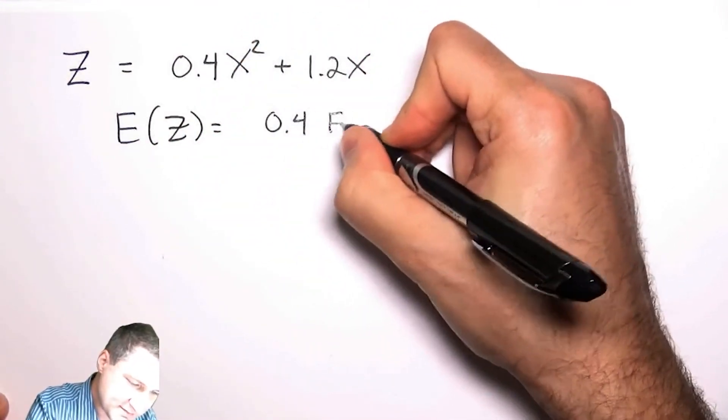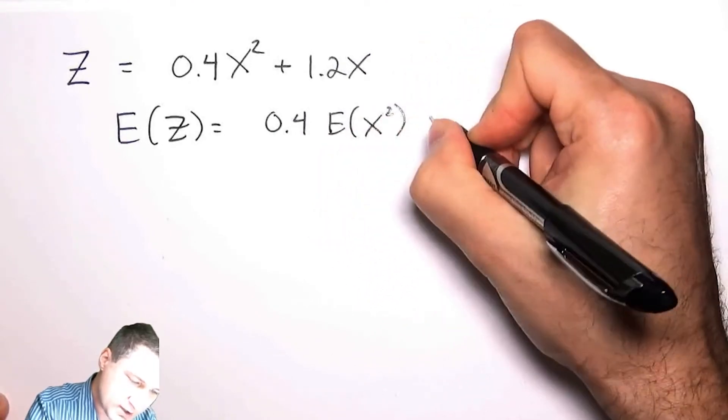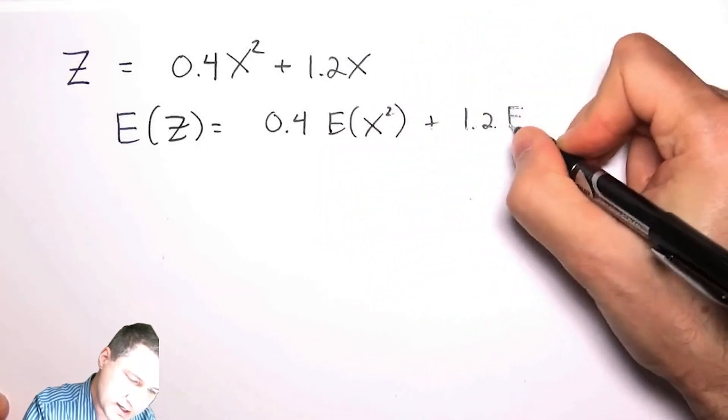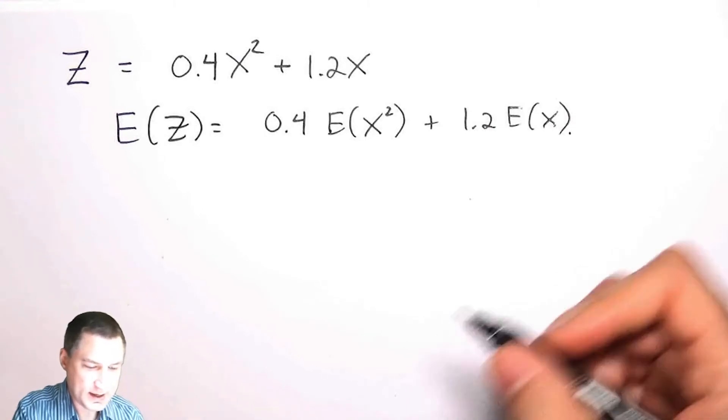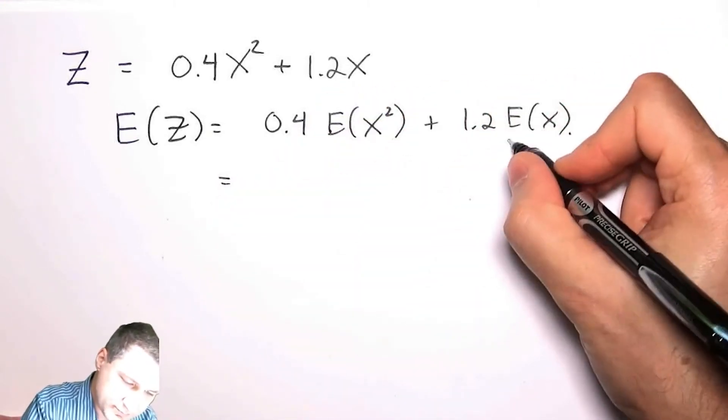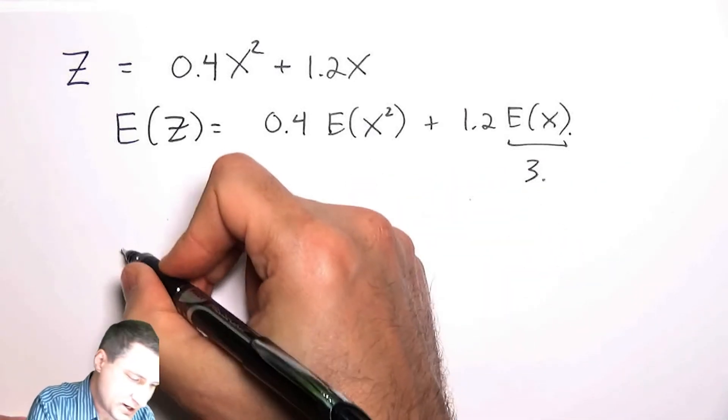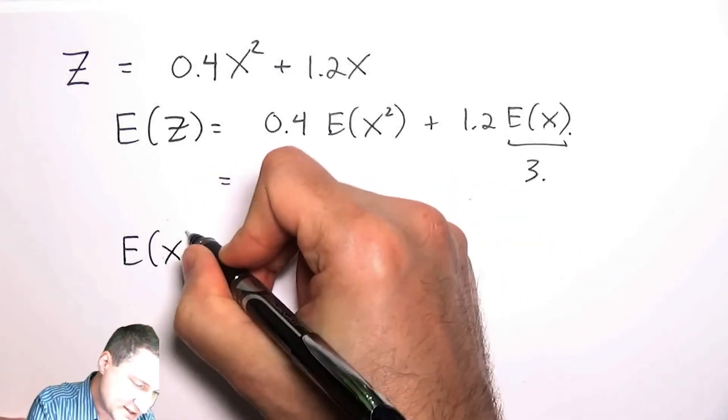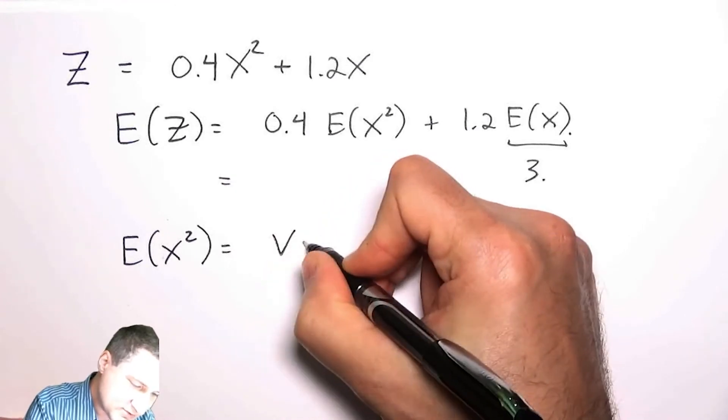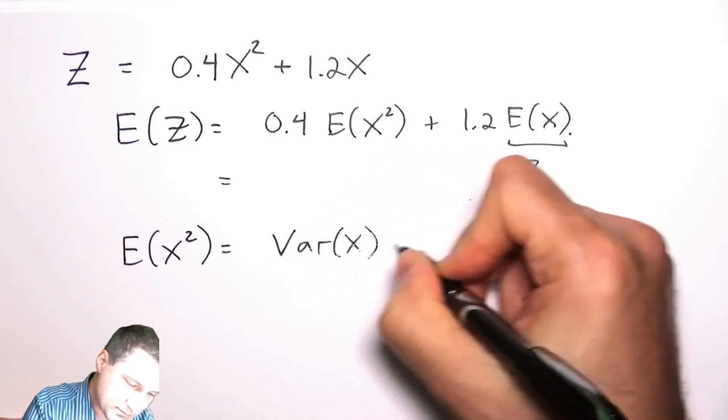I can say this is going to be 0.4 times the expected value of X squared plus 1.2 times the expected value of X. This part I already know is 3. I don't actually know expected value of X squared, but one thing I can remember is the expected value of X squared is related to the variance.